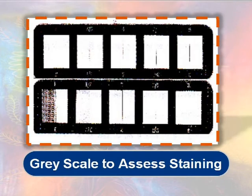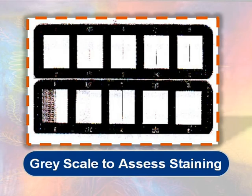This is the other type of grayscale for assessing staining. The extent of staining on the adjacent white material is assessed with the help of a grayscale and can be expressed in the same scale as for shade variation.